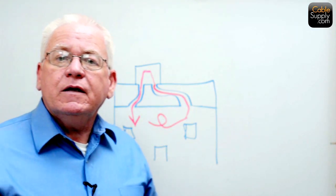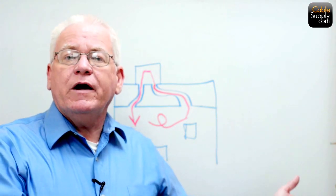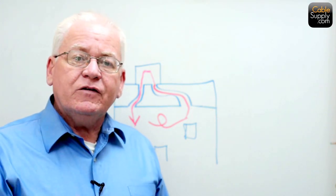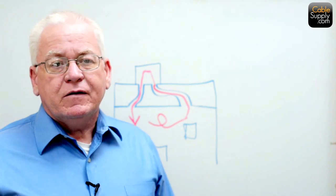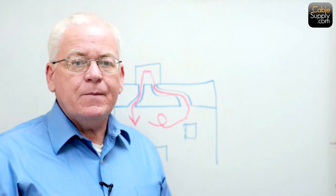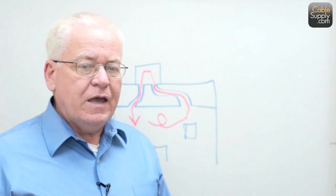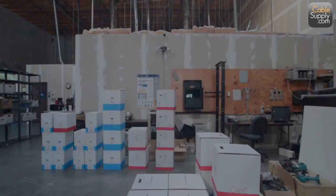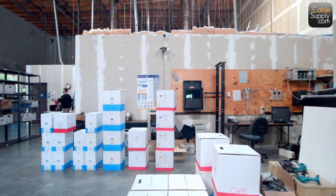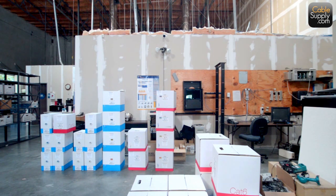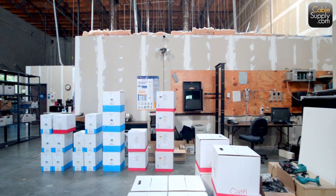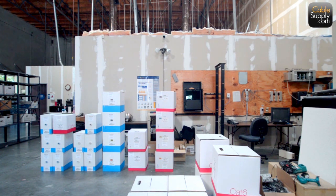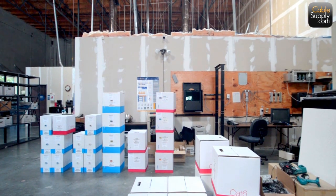Let's take a look at the ceiling in my warehouse and see if you can determine whether it's CMR PVC or CMP plenum. Now we're out in the warehouse. This is the end of our warehouse at Cable Supply, and it's a great example of a CMR ceiling — a PVC ceiling, a non-plenum ceiling. All of those terms mean the same thing.